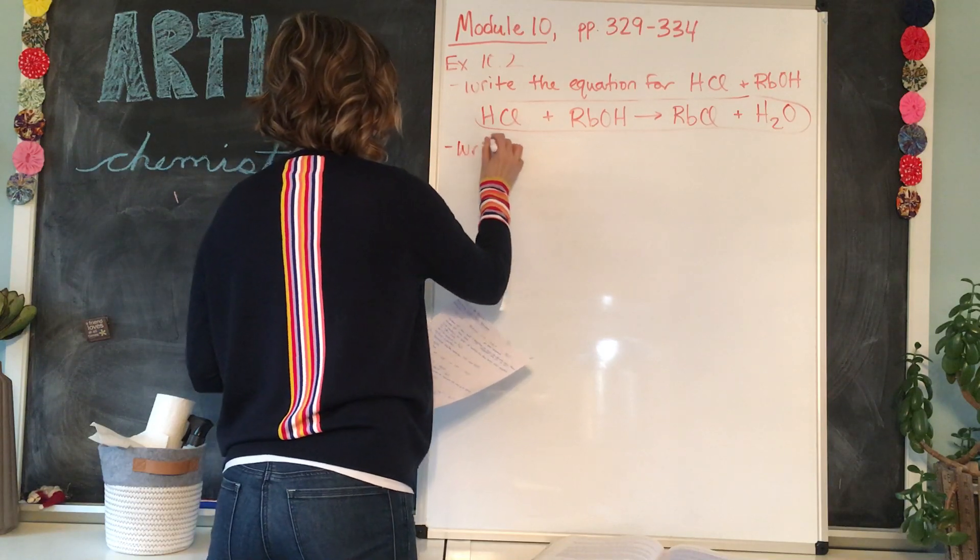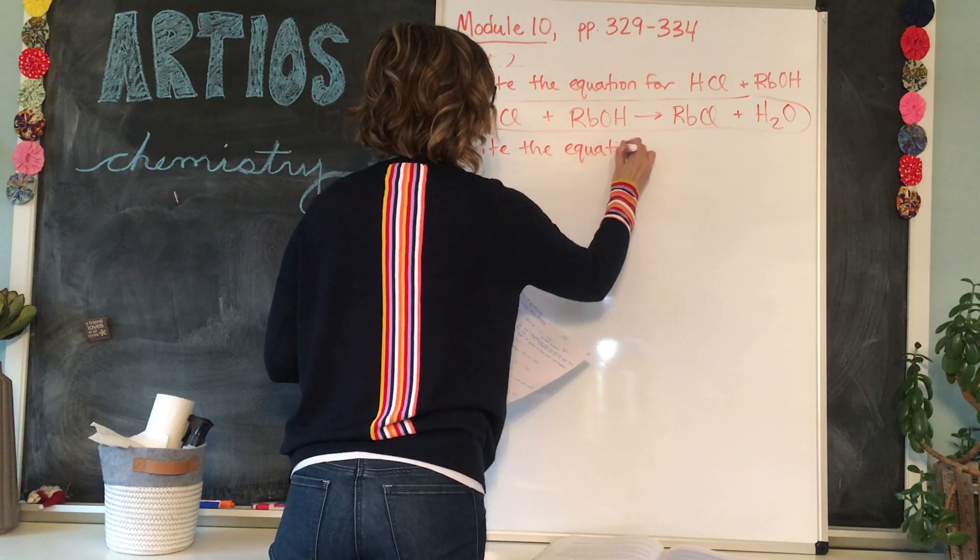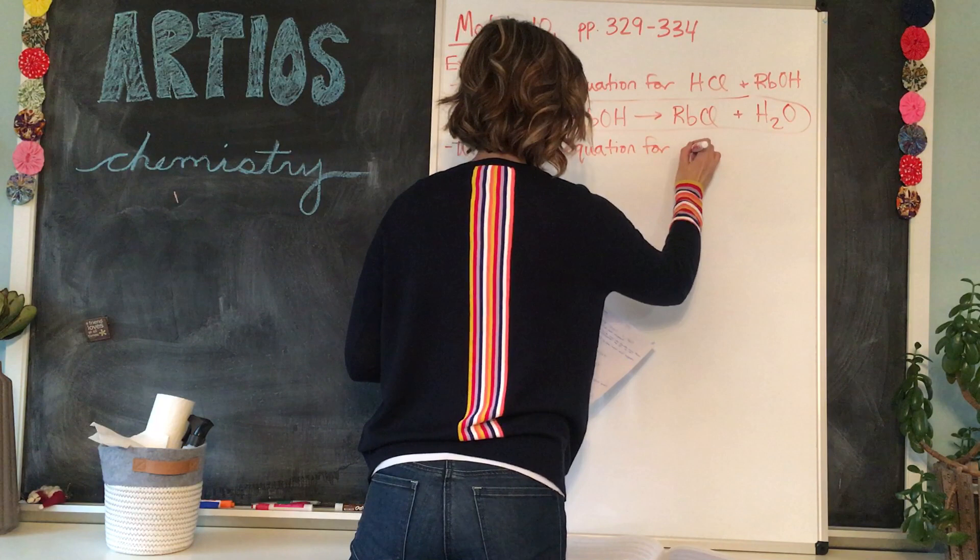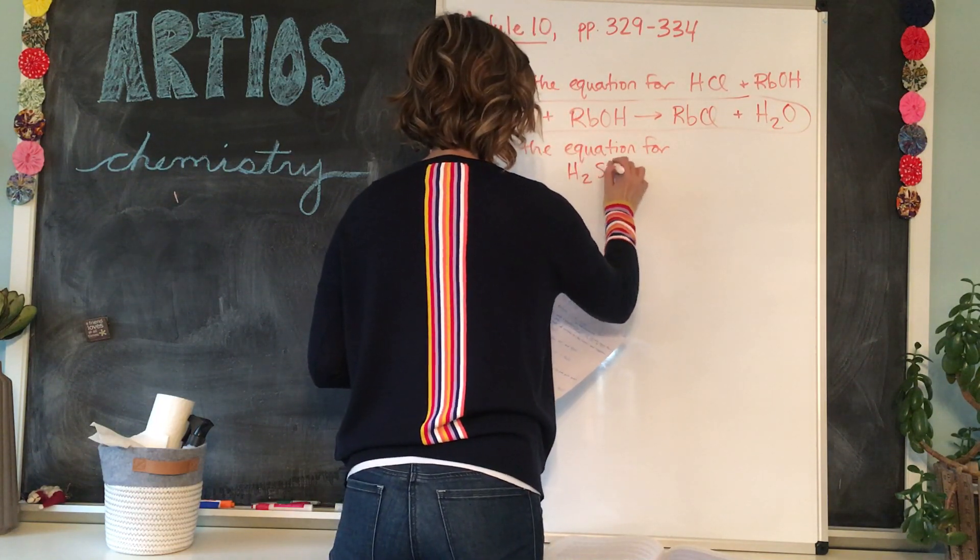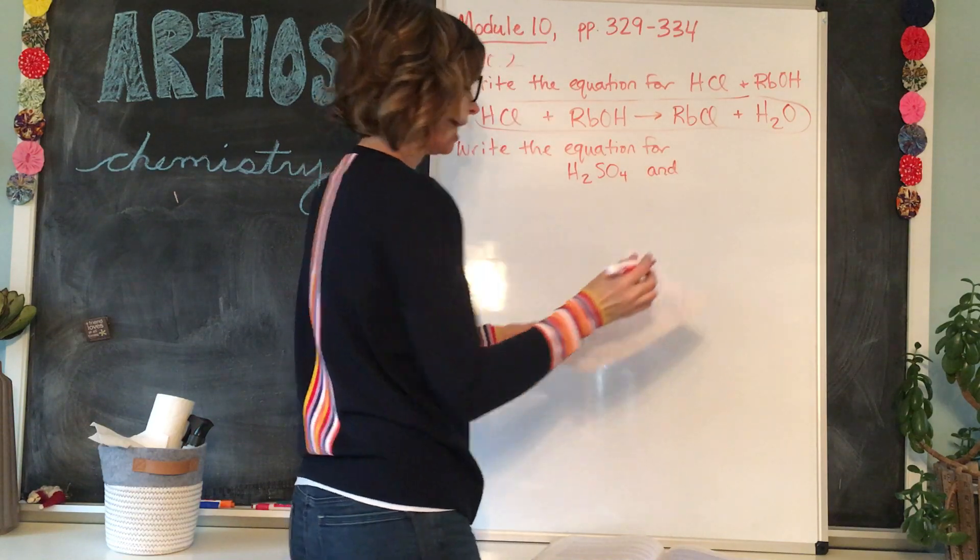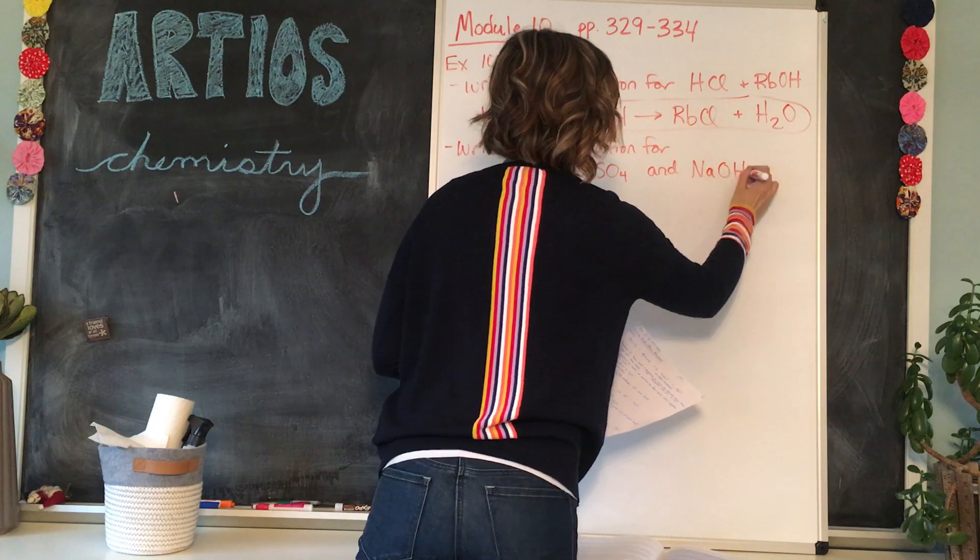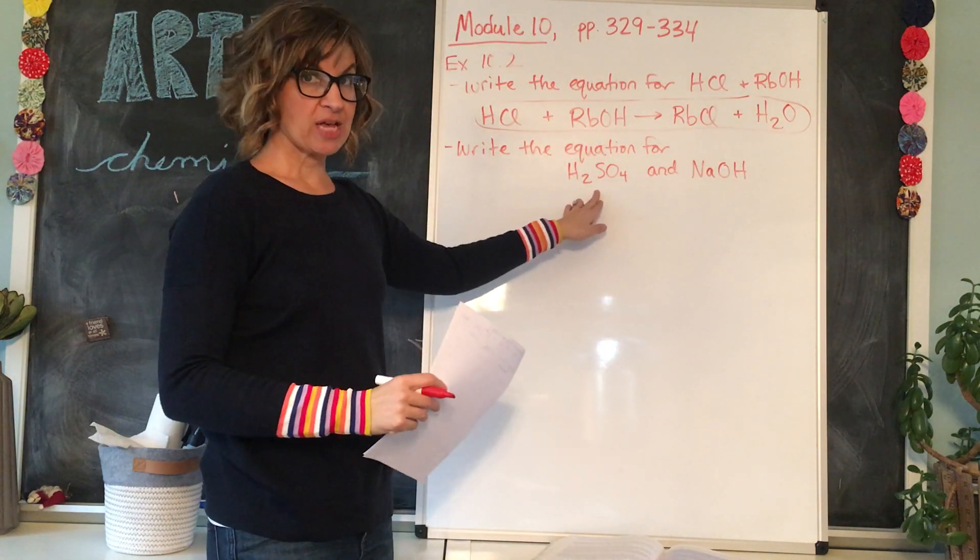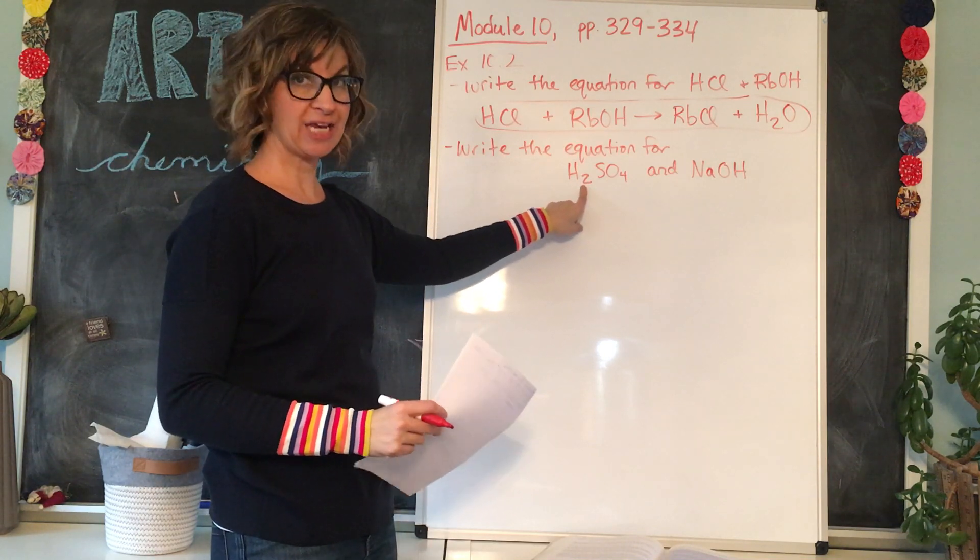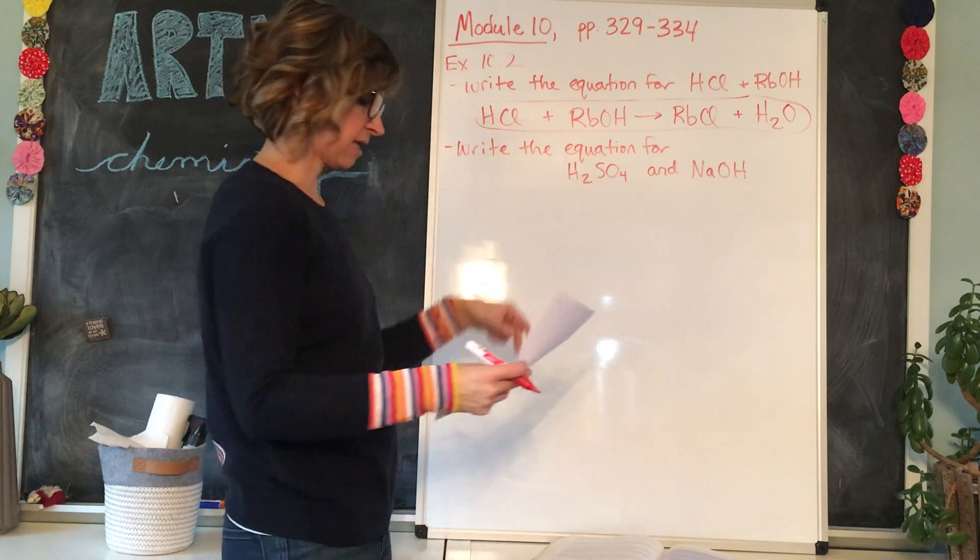Write the equation for H2SO4 and NaOH, sodium hydroxide. Okay. First of all, look at H2SO4. This is diprotic, meaning that it has two H plus ions that it's going to be ready to donate. Okay. So keep that in mind.